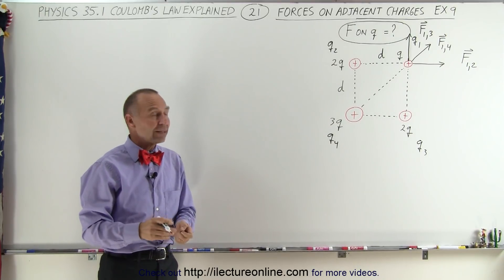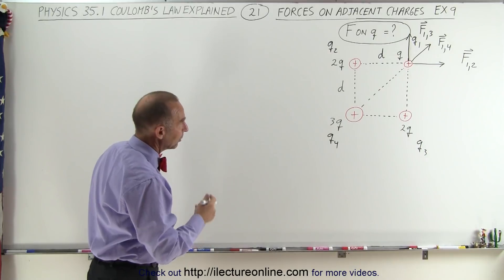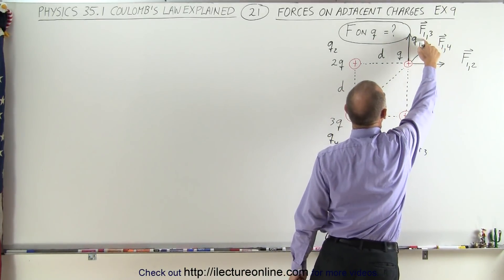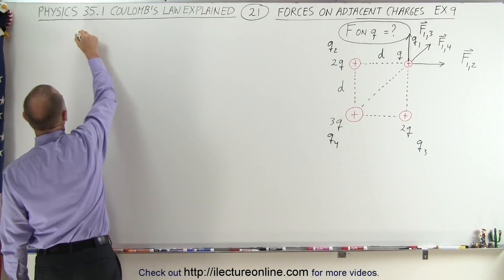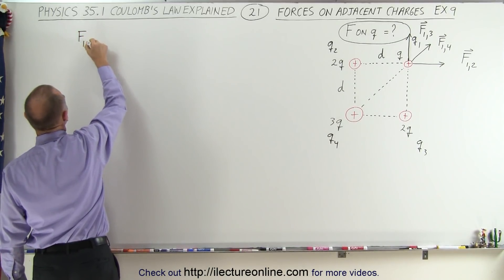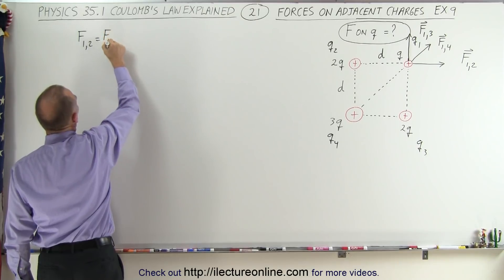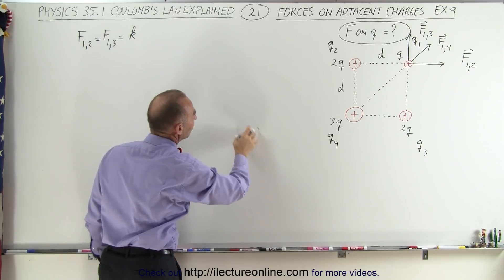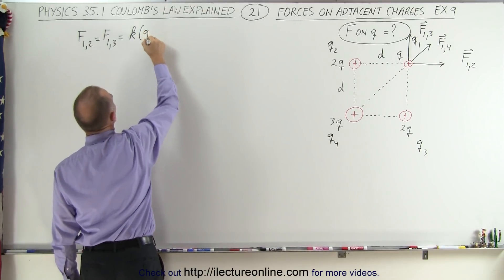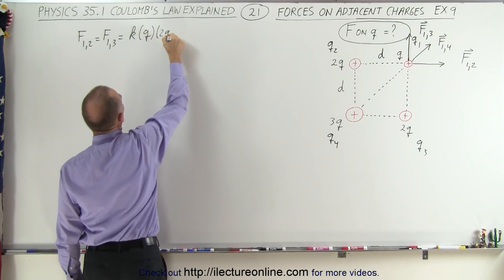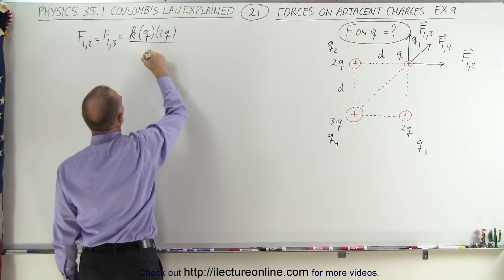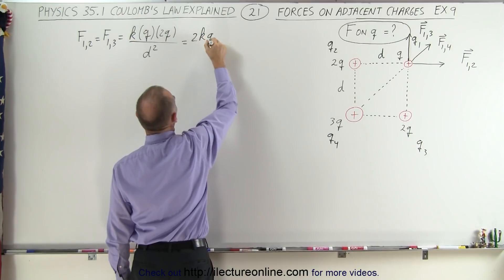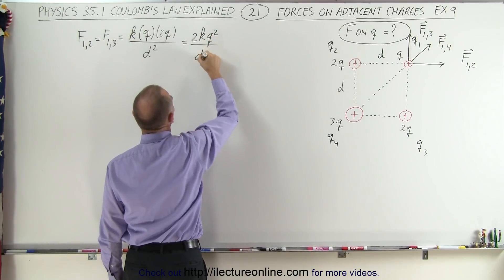Now we want to find the magnitude of those forces. Due to symmetry, the force F1,2 should be equal in magnitude to force F1,3. So F1,2 equals F1,3, which equals k times the product of the two charges — that's q times 2q — divided by the distance squared, d squared. So this equals 2kq² divided by d².